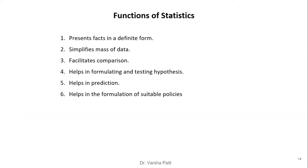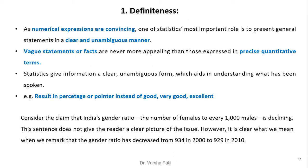Now we will look at the functions of statistics. The first function is definiteness. Numerical expressions are more convincing, so one of statistics' most important roles is to present general statements in a clear and unambiguous manner. Vague statements are less appealing than those expressed in precise quantitative terms. Statistics gives information in a clear form — for example, a result expressed as a percentage rather than as a vague remark like 'good' or 'excellent'.